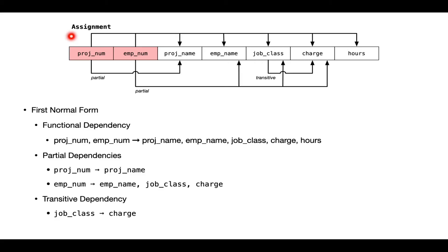Notice that this functional dependency is shown above the list of attributes. The diagram convention is to put partial and transitive dependencies below, and complete functional dependencies above the diagram, to make it really evident which dependencies need to be dealt with to move to a higher normal form. Given that, we can look through the list of attributes and try to identify partial dependencies. Partial dependencies have a strict subset of the key on the left-hand side. The full key is project number and employee number, but we can also see dependencies that involve only one of those. From the project number, we can infer the project name — it functionally determines the project name.